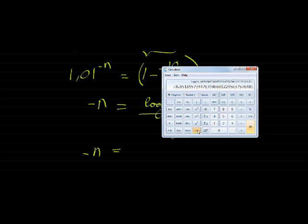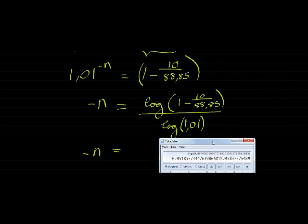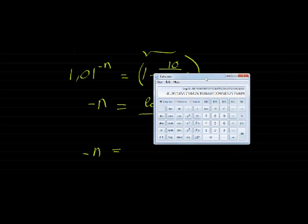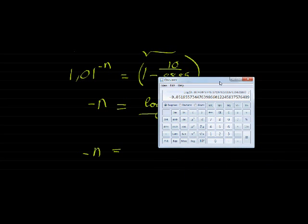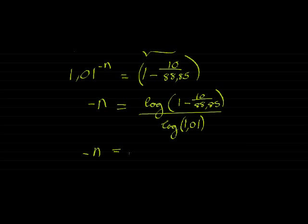Log of 1 minus 10 over 88.85, and log of that is divided by log of 1.01. So 1 minus 10 over 88.85, log of that, divided by 0.01 log of that. And I get negative 11.99. Round it to 2 decimal places, negative 12.